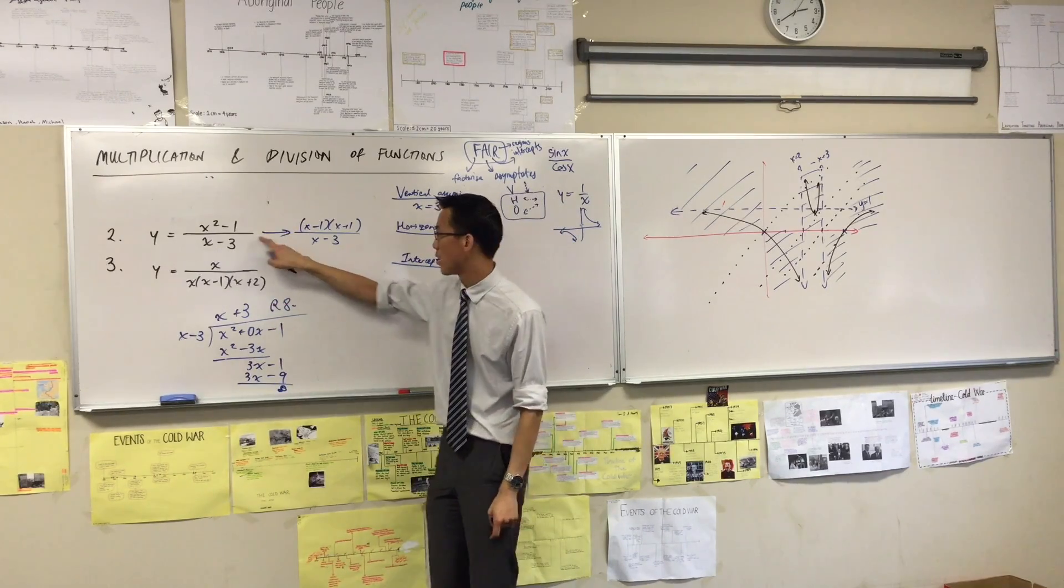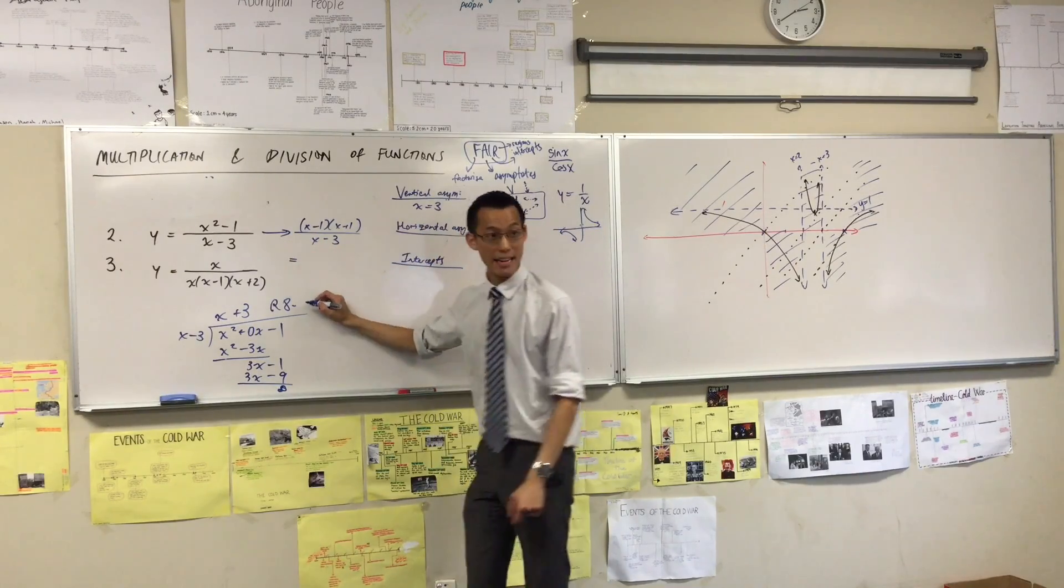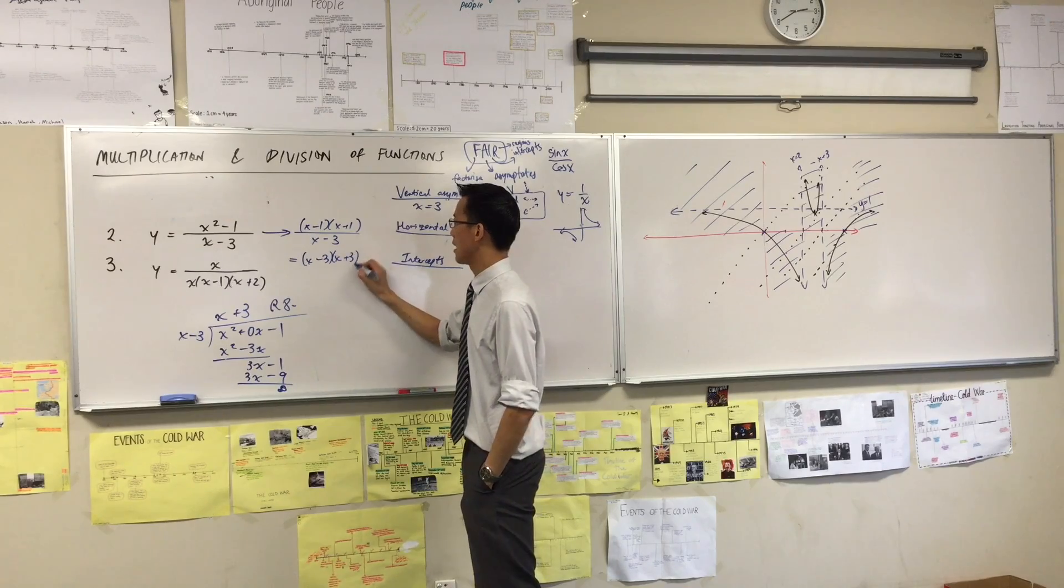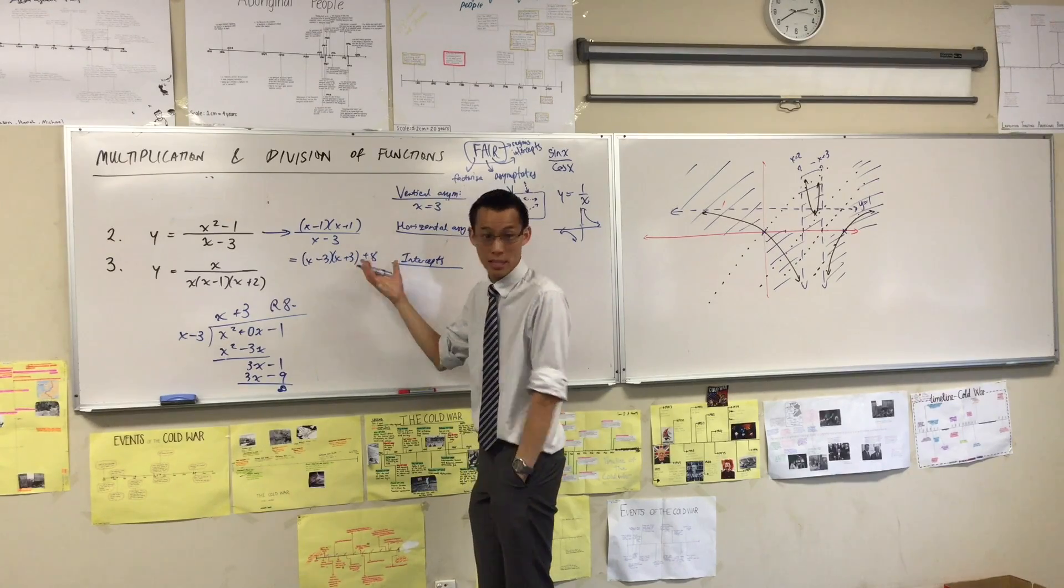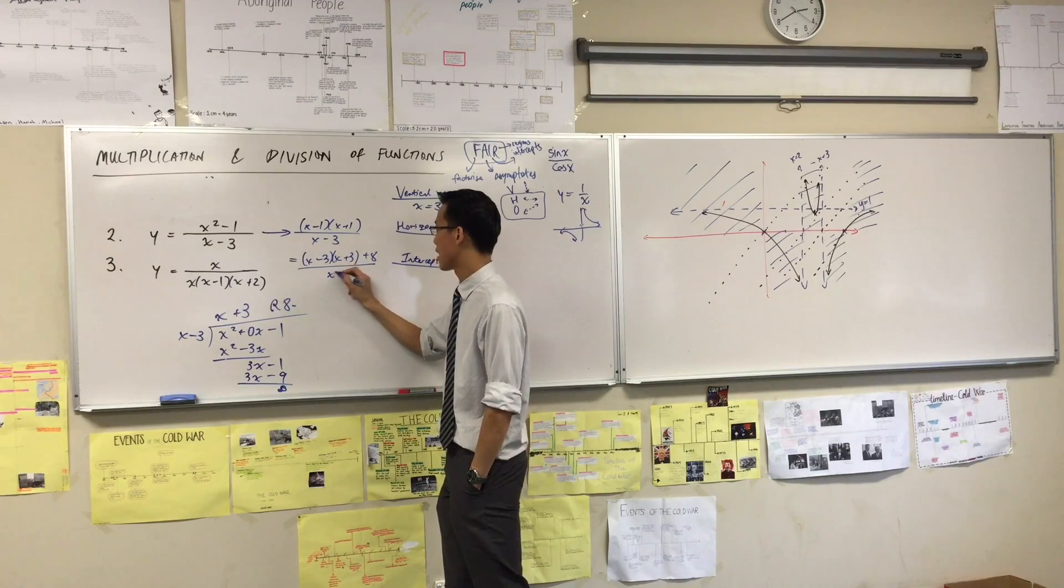So I can rewrite x squared minus 1. I don't have to rewrite it like this, I can write it differently. I can also write it as x minus 3 times x plus 3 plus 8. That's x squared minus 1. It's just another way to write it, all divided by x minus 3.